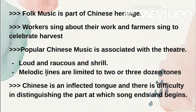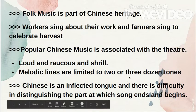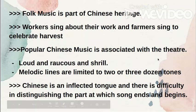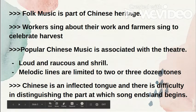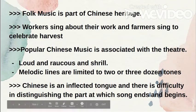The melodic lines of popular Chinese music are limited to two or three dozen tones — that's 24 to 36 tones, which is their limit. Chinese is also an inflected language, and there is difficulty in distinguishing the part at which songs end and begin. That's how their music goes.